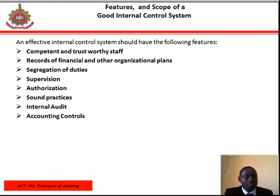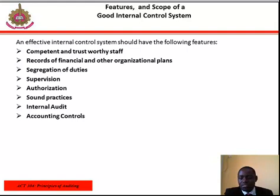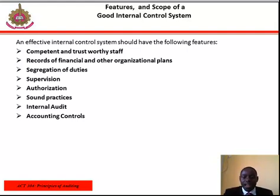Some practices: the company should have well-established procedures, policies, delegations, and an organizational manual. Internal audits: it is part of the internal control and should be independent of internal check. Accounting controls: a proper accounting information system should be established so that information relating to accounts is properly collected, recorded, and accounts prepared.